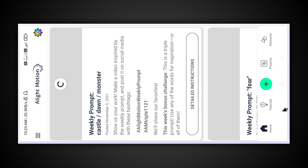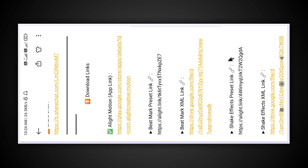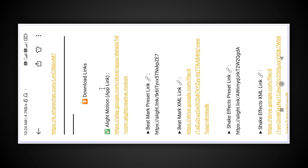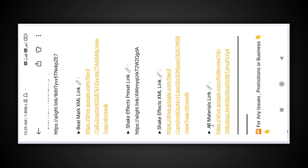If you want to create the video, you will download the materials in the description. You can find the download link, the bitmark preset link — tap the link to AletMotion. You can do the XML file in the shot, and ShakeFX also has preset and XML. Use the preset import in XML. There are links to all materials, so tap to access them, and download the lyrical video.